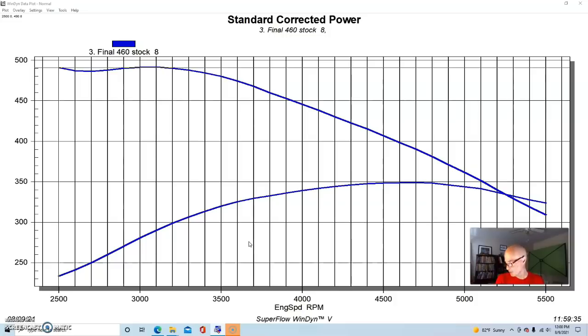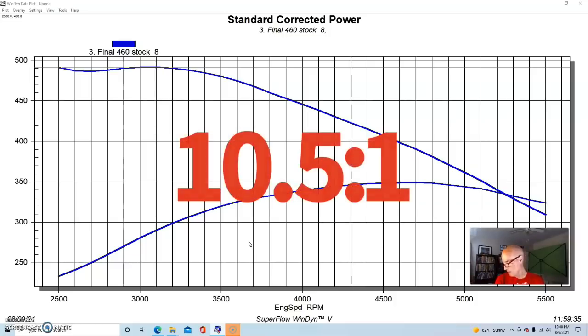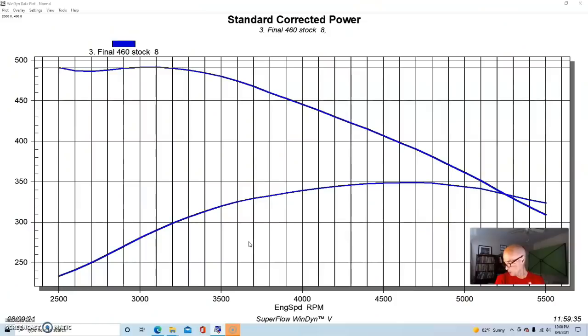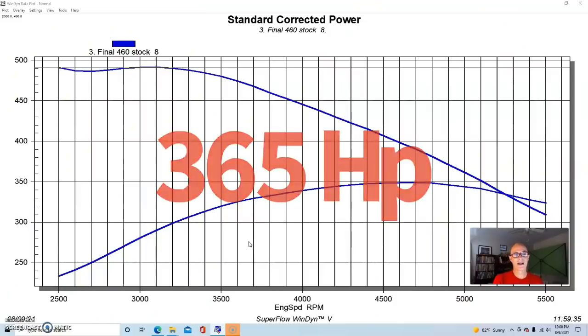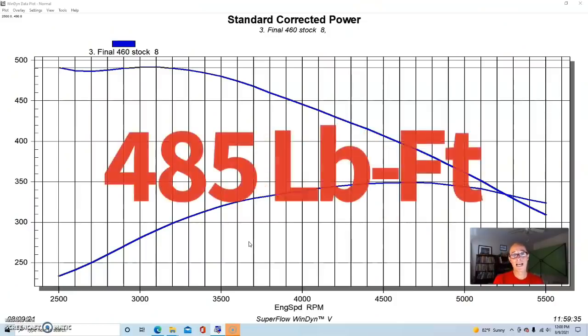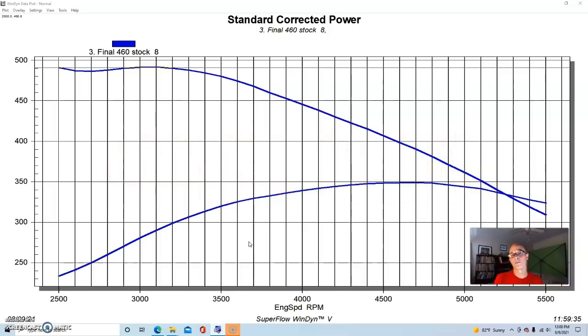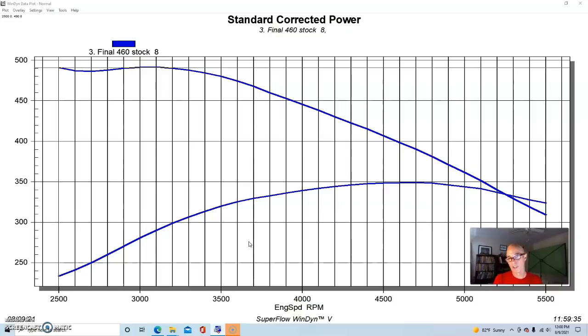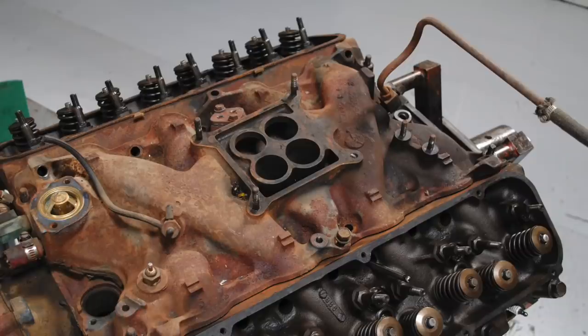This was actually an early one, so this is a '68 or '69 460, which meant it had higher compression than the later ones did. It was 10.5 to 1. It had a hydraulic flat tappet cam. It was originally rated at 365 horsepower and 485 foot-pounds, so more than the big block Chevy was. But as I pointed out, the big block Chevy is a net rating and this is an earlier gross rating, so the actual numbers as we'll see are very comparable.